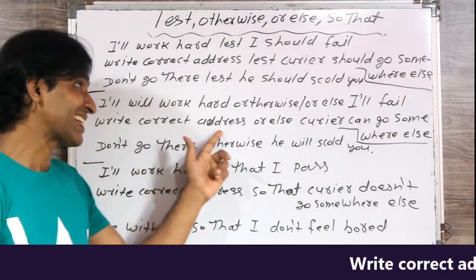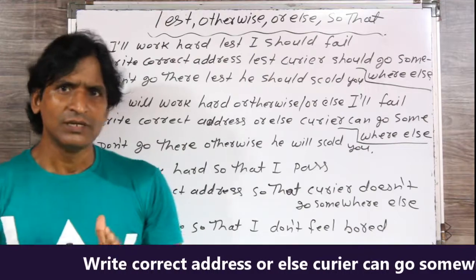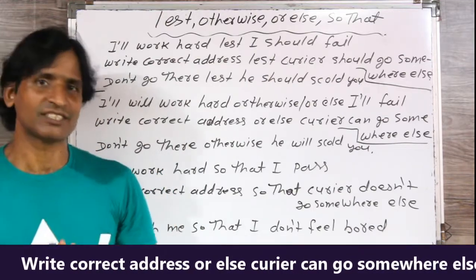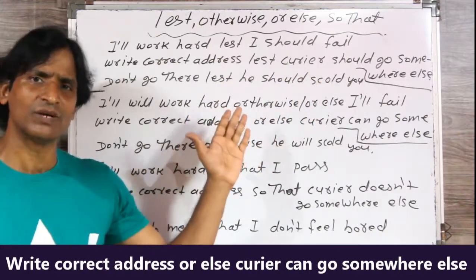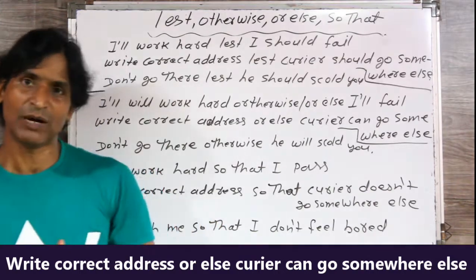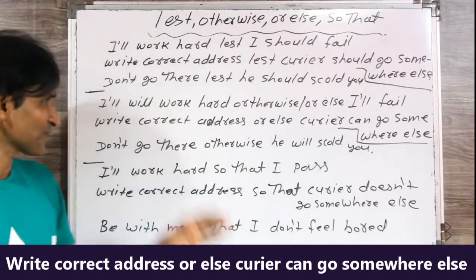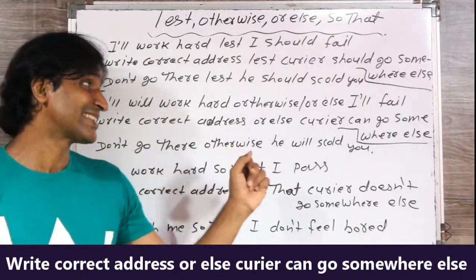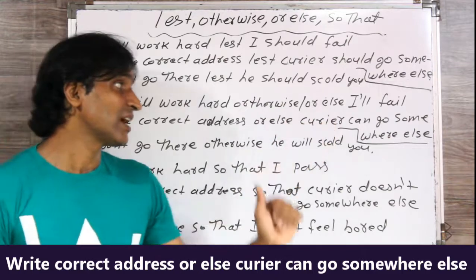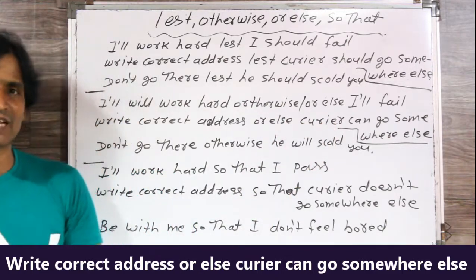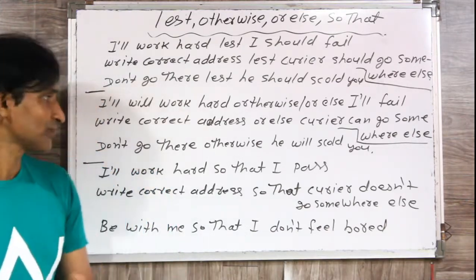Second sentence: 'Write correct address, or else / otherwise, courier can go somewhere else.' Meaning: सही पता लिखो, नहीं तो / वरना courier कहीं और जा सकता है. You can use 'or else' or 'otherwise' — both are correct here.